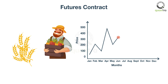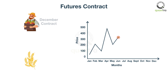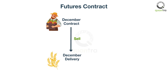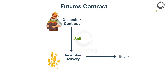Enter futures contracts. Now you can sell your future harvest right away at an agreed price and delivery. The other side of that coin would be a buyer of the commodity, also seeking to reduce risks and uncertainties. Kellogg's buys a large amount of wheat, and they may want to lock in prices in advance, and the futures market is where they can do that.